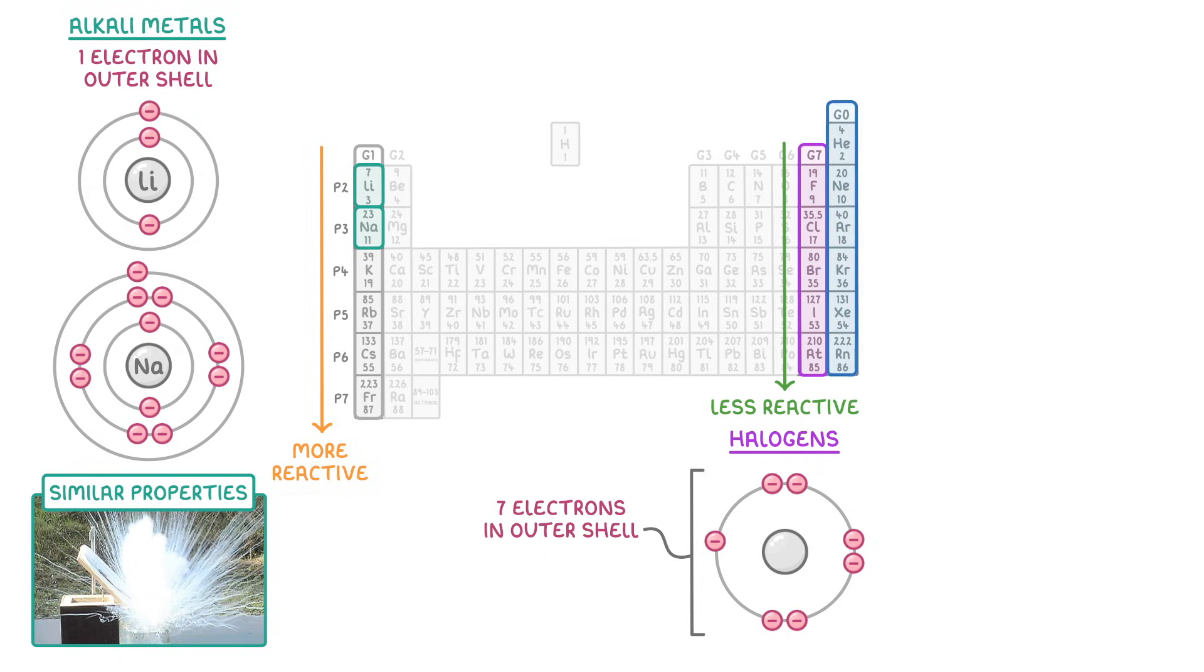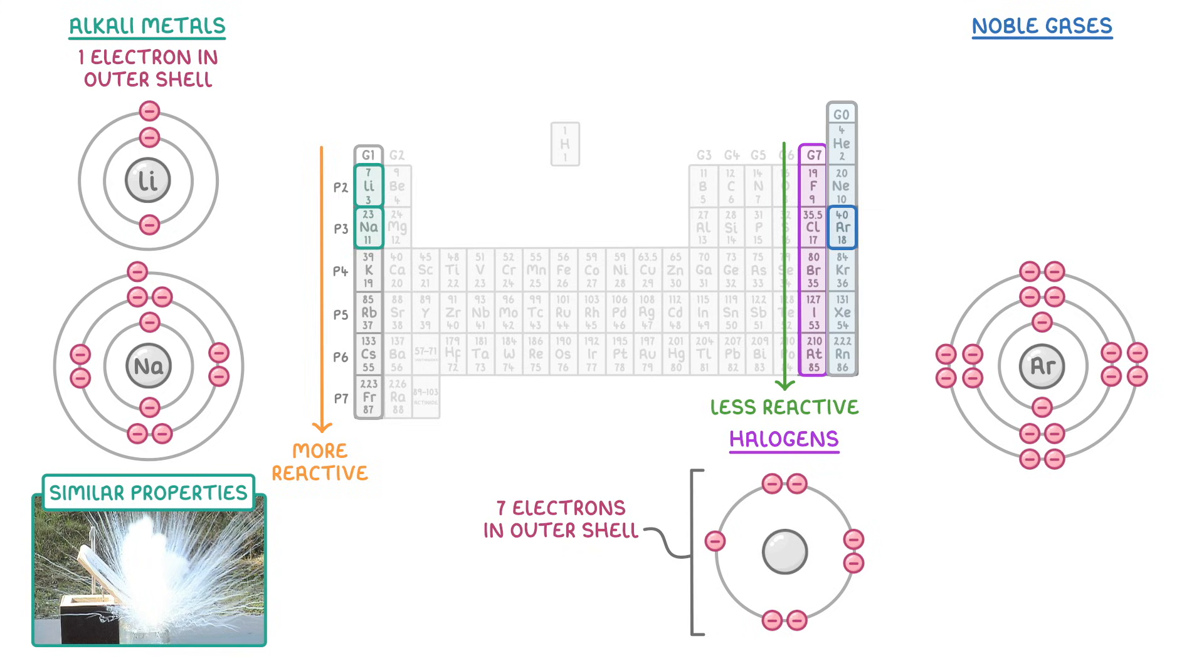As we said before, group 0 is a bit different. These elements are called the noble gases, and they all have full outer shells. So argon, which has 3 shells, has 8 out of 8 in this outer shell. While helium, which only has 1 shell, has 2 out of 2. Because, if you remember, the first shell can only hold up to 2 electrons. Because they don't need to gain or lose any electrons, the noble gases are all very unreactive.